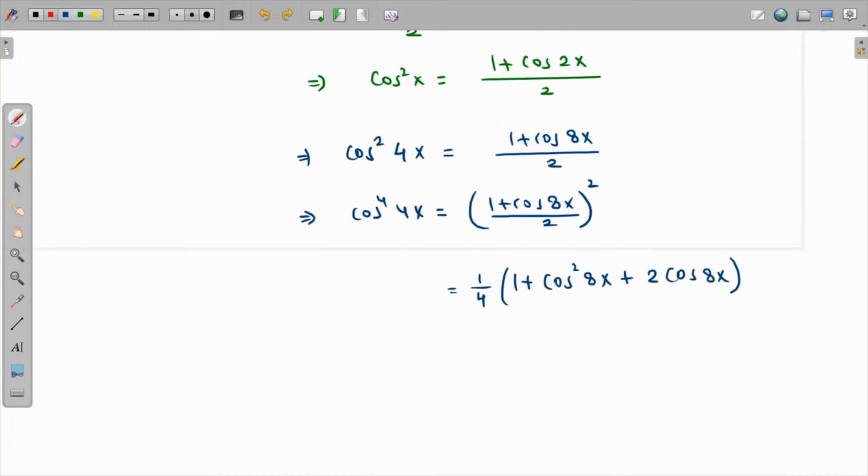Again, we're going to use the analogy from the original equation and replace x by 8x. So this 2x will be replaced by 16x, giving us cos² 8x = (1 + cos 16x)/2. Let's use that and rewrite our final answer.